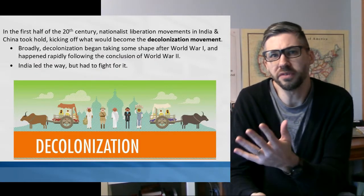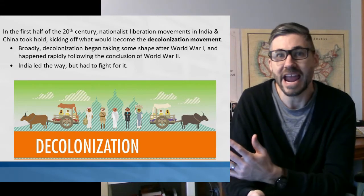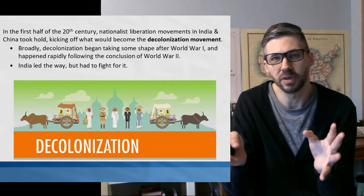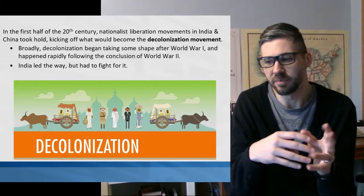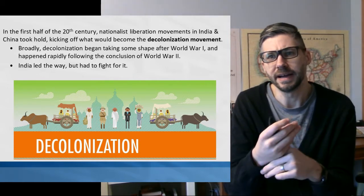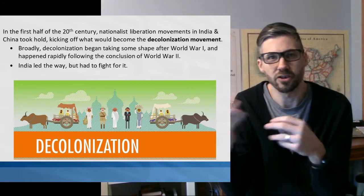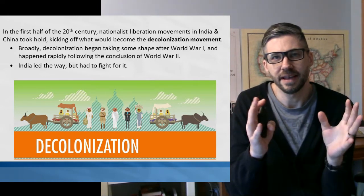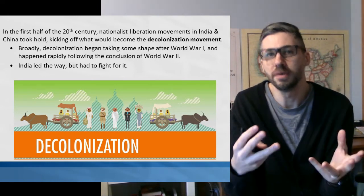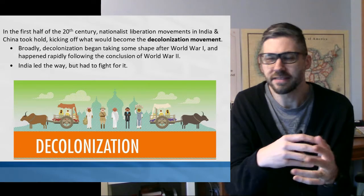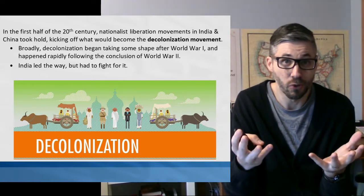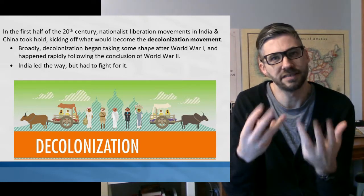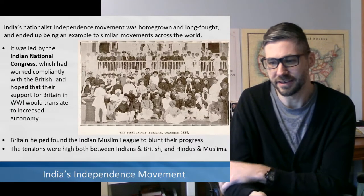So decolonization — we've told some of these stories before. We studied Haiti, we studied the United States, but there is a whole phenomenon of this that really takes place in particular after World War II. This happens across South Asia, Southeast Asia, and Africa — this is the end of that period of new imperialism. For the purposes of our course, we're just going to look at India as our example of that and learn about how that process tended to work.